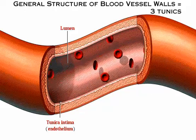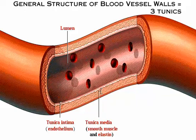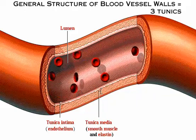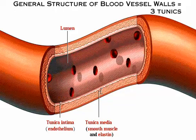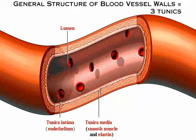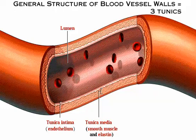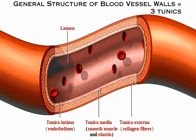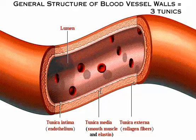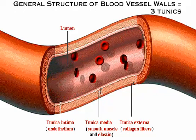The tunica media, the middle layer, consists mostly of circularly arranged smooth muscle cells and sheets of elastin. The muscle cells contract and relax, whereas the elastin allows vessels to stretch and recoil. The tunica externa is the outermost layer of the blood vessel wall; it is composed of loosely woven collagen fibers that protect the blood vessel and anchor it to surrounding structures.